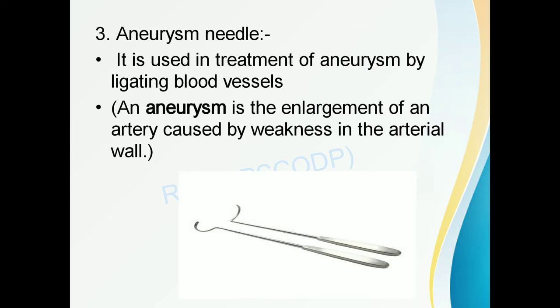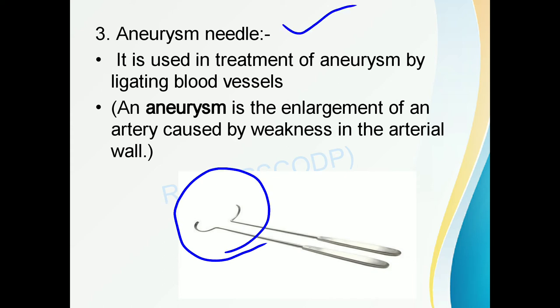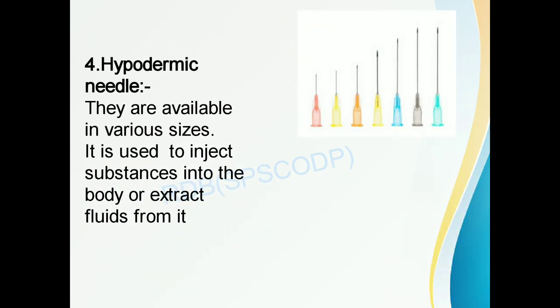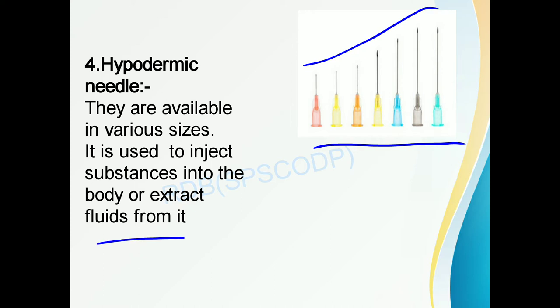The next type of needle is the aneurysm needle. It is used in the treatment of aneurysm by ligating the blood vessel. Aneurysm refers to the enlargement of arteries. The hypodermic needle is commonly used with a syringe for injecting drugs into the body. It is available in various sizes and is used to inject substances into the body or extract fluids from it.